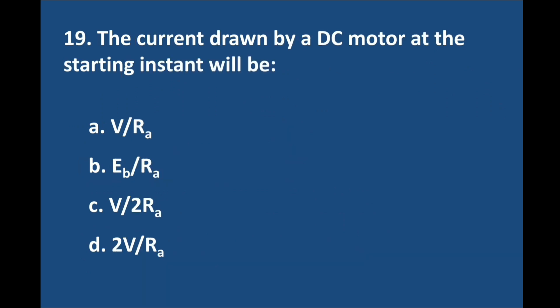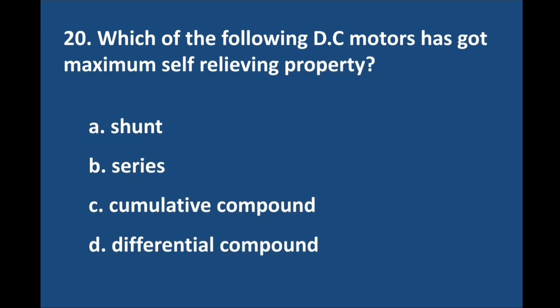Question number 18. The current drawn by a DC motor at the starting instant will be — answer is option A: V by RA. Question number 20. Which of the following DC motors has got maximum self-relieving property? Answer is option B: Series.